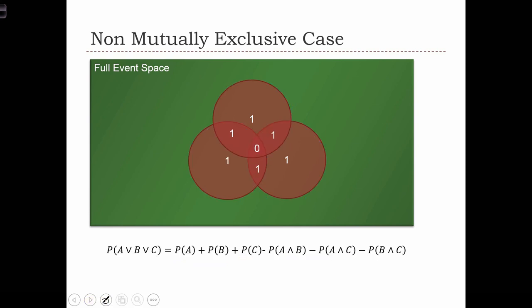So the first thing that we're going to do is remove the bivariate intersections. So we're removing this area once.